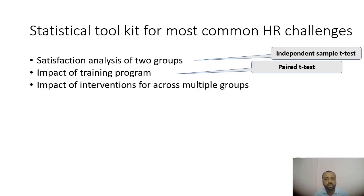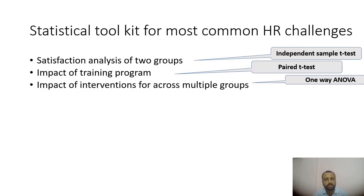Similarly, if you have another training or intervention where there are more than two groups, you may use one-way analysis of variance (ANOVA). All these tests require you to calculate the mean score and compare means. There are assumptions associated with each of them that you need to fulfill. You need to look at the type of variable, the distribution of the variable, and some other things before proceeding. But these statistical tools will support you in making a lot of decisions.